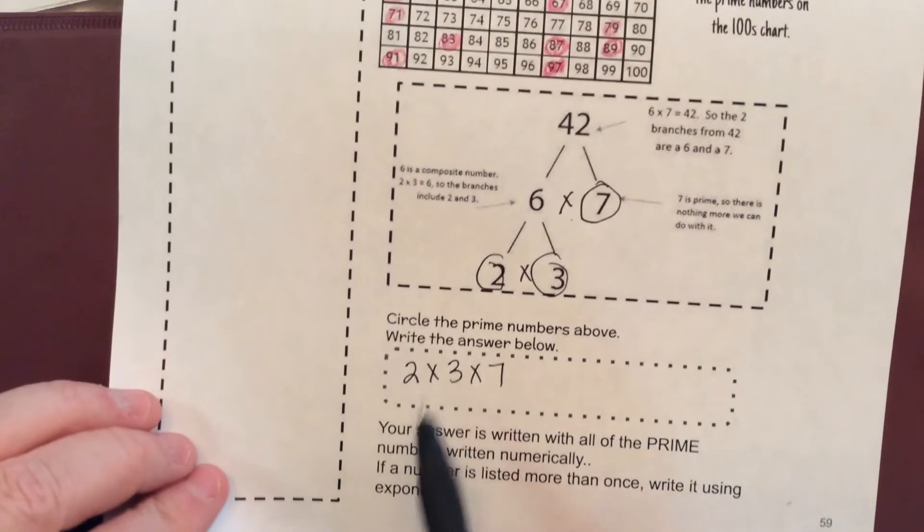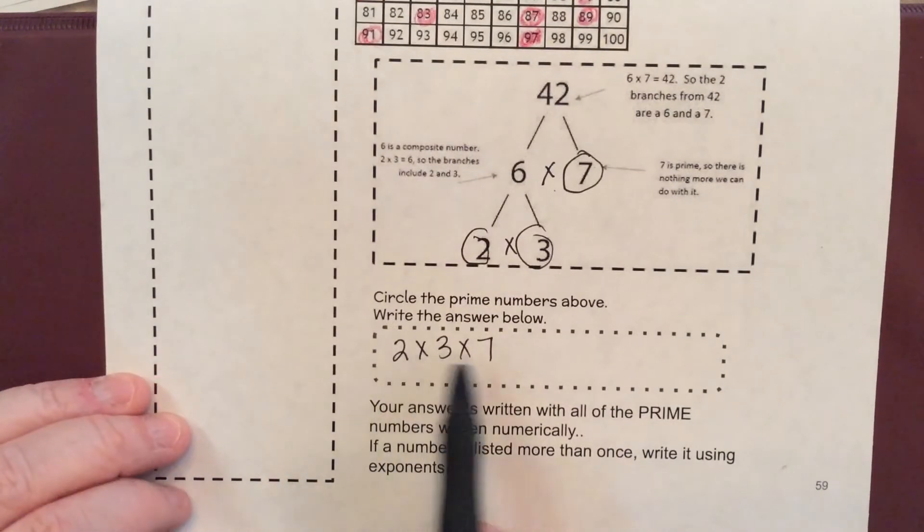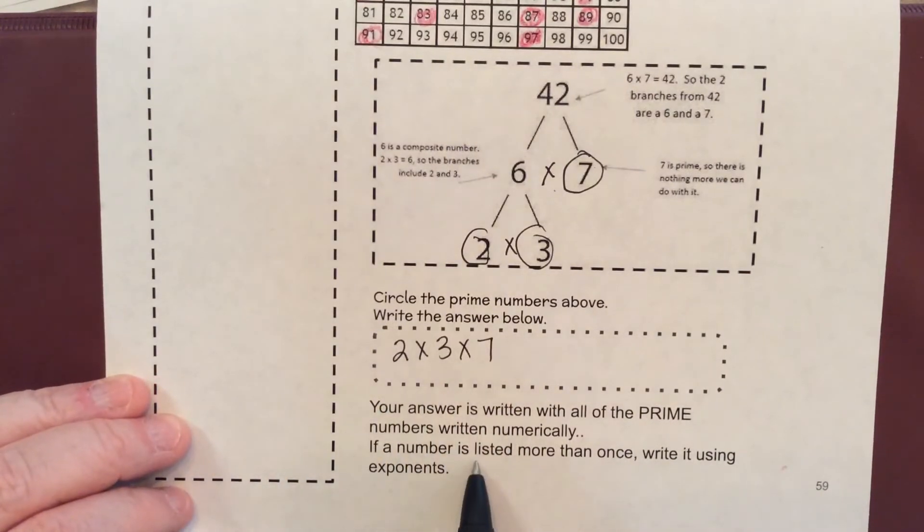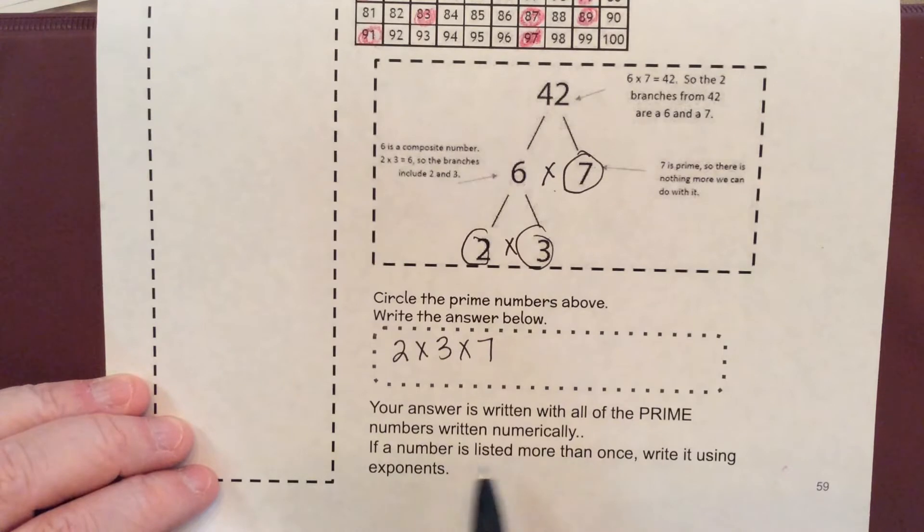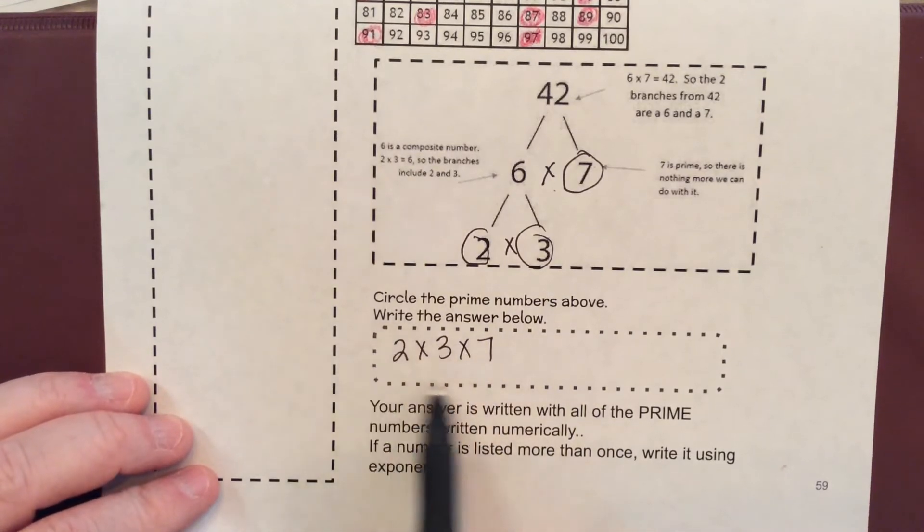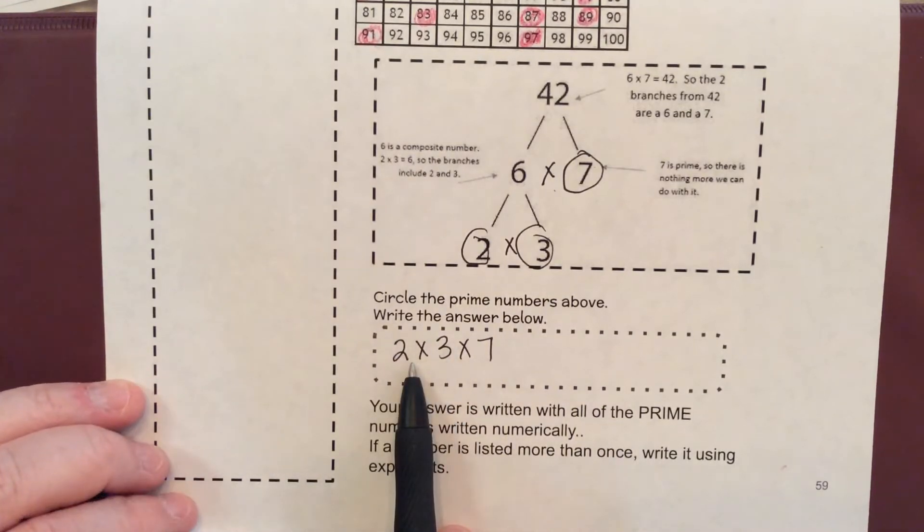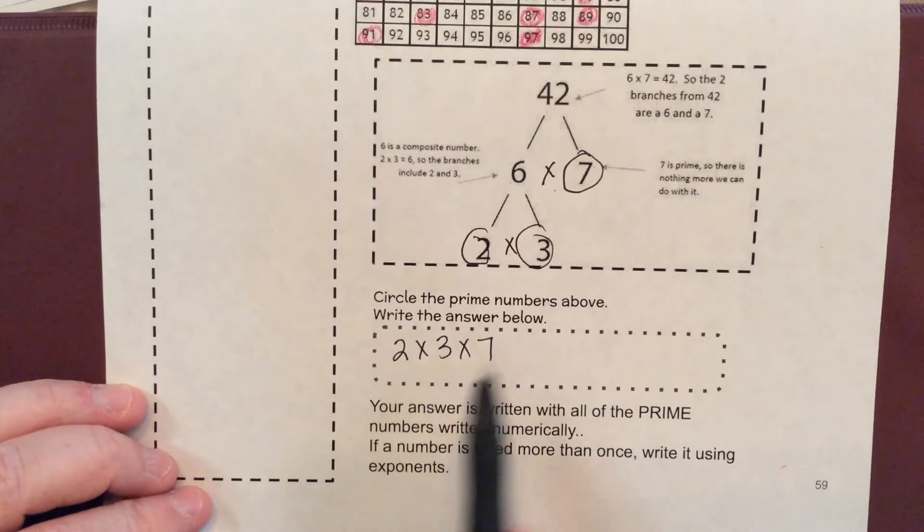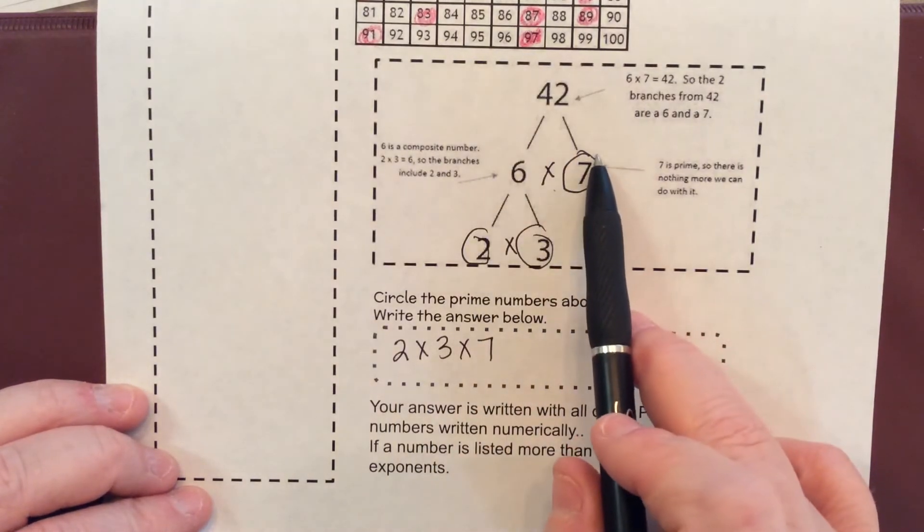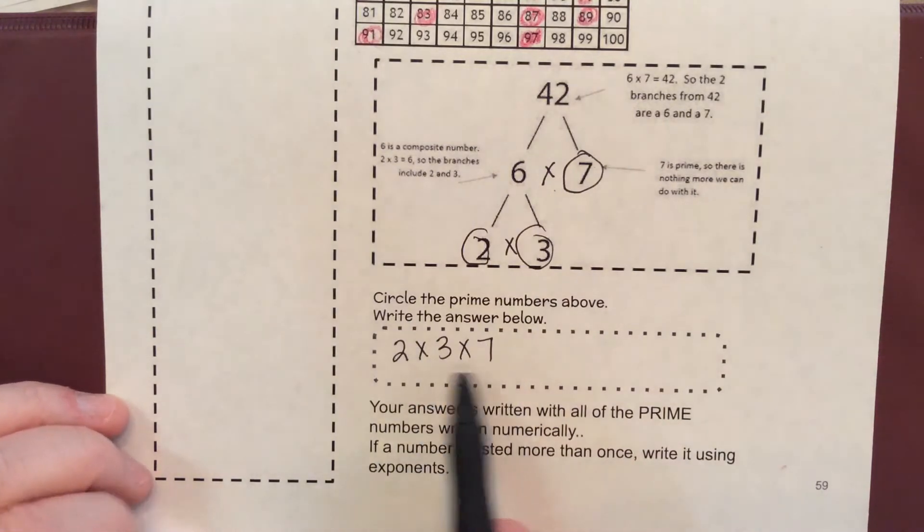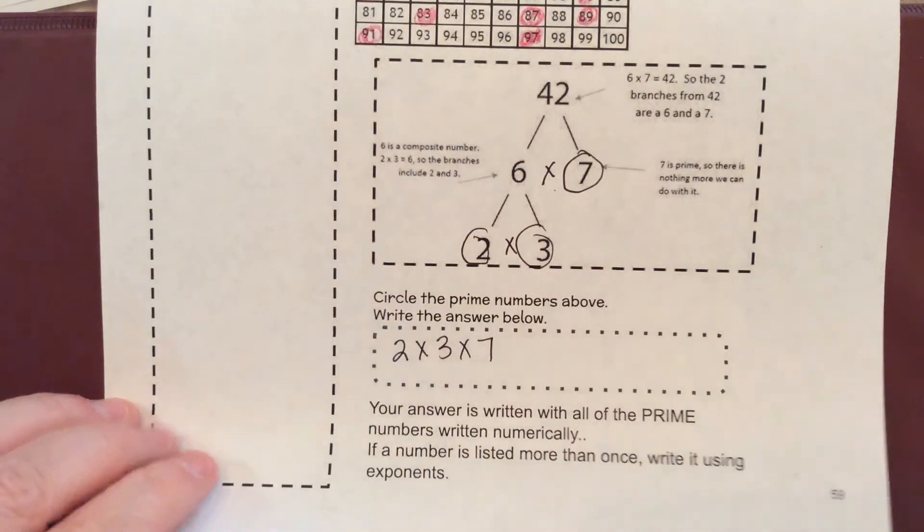Your answer is this right here, but you have to write your numbers numerically. So we put them in order, least to greatest here. And if they're listed more than once, we'll write it with an exponent. And we'll show you that in a second. But right now, that is your answer. A lot of times when I say show the prime factorization, I get a factor tree, but I don't get the actual answer. This is the answer because two times three times seven is 42.